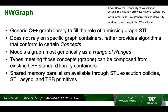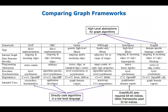NW Graph from Pacific Northwest National Laboratory and the University of Washington is a generic C++ library that uses concepts to compose graph types from STL containers. It combines STL async and TBB to get parallelism. What makes it stand out is that it's a great exemplar of building a graph system using the greatest and latest features of modern C++.